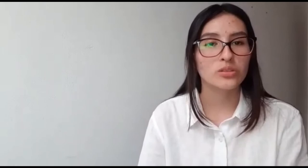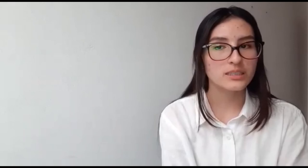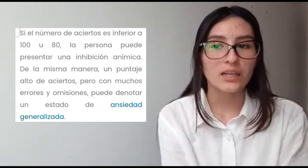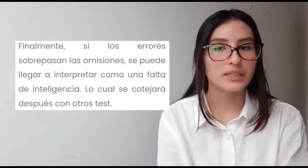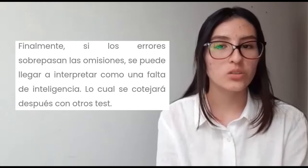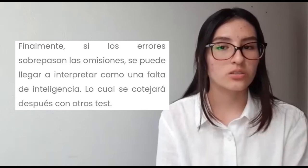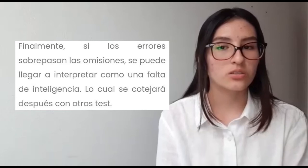Las puntuaciones: la principal puntuación del test de Toulouse es el índice global de atención y percepción, que tiene como siglas IGAP, también llamado puntuación directa (PD). Se trata de la puntuación obtenida tradicionalmente en la prueba y constituye una medida de la capacidad perceptiva y atencional de los evaluados. Se calcula de la siguiente forma: IGAP = A (aciertos) − (E errores + O omisiones). En la valoración cuantitativa, el número de cuadrados bien tachados debe ser superior a 100, y el número de fallas no debe sobrepasar el 10% de los aciertos.